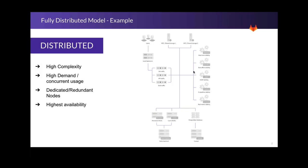The last example is the distributed model. This takes the hybrid model further and breaks out all of the services that were previously sharing resources on the same node into their own discrete nodes. This architecture is the most complex to set up, maintain, and monitor, but it allows for very heavy demand and more precise scaling control. To give an idea of the scaling capabilities, this model is what's utilized for GitLab.com to host all of the projects running in the SaaS offering. As you can see in this example, Sidekiq has been broken up to multiple nodes, traffic has been split out from Git, API, and web traffic, and there's more database caching and redundancy.